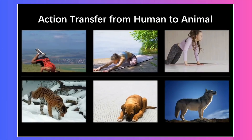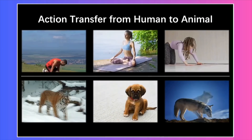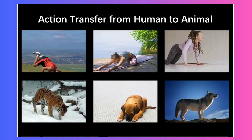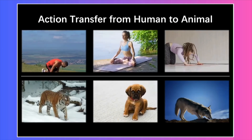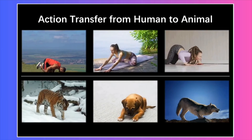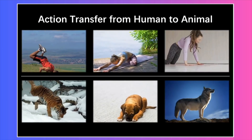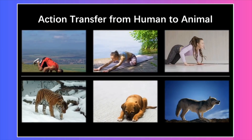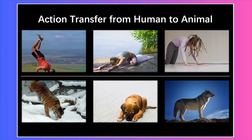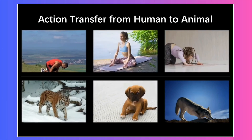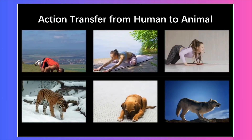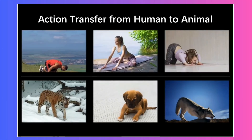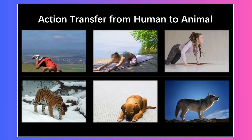Here's the craziest part — you can even transfer human actions onto animals. The top row is the reference video of a person, and the bottom row shows what happens when you apply that motion to a still image of an animal. It's literally getting a tiger to do a handstand, and in the other two, it's making a dog and a wolf perform intricate yoga poses. With this tool, you could film yourself doing something and then map that exact motion onto your own pet. You can truly control the movement of almost anyone or anything.